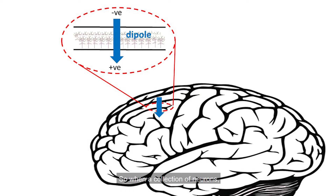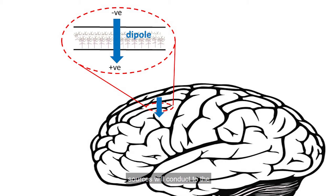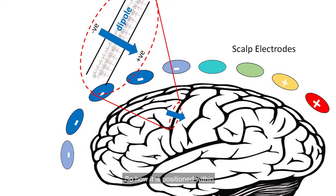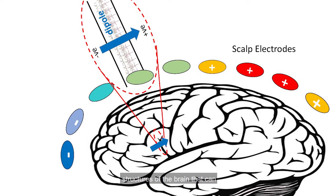When a collection of neurons in the cortical sheet are all active, they set up a dipole of negative and positive sources. These negative and positive sources conduct to the scalp and are what we detect when we place electrodes on our head. Whether the signal is negative or positive simply reflects the orientation of that dipole in the brain — how it is positioned within the cortical sheet or in other structures that can give rise to EEG.